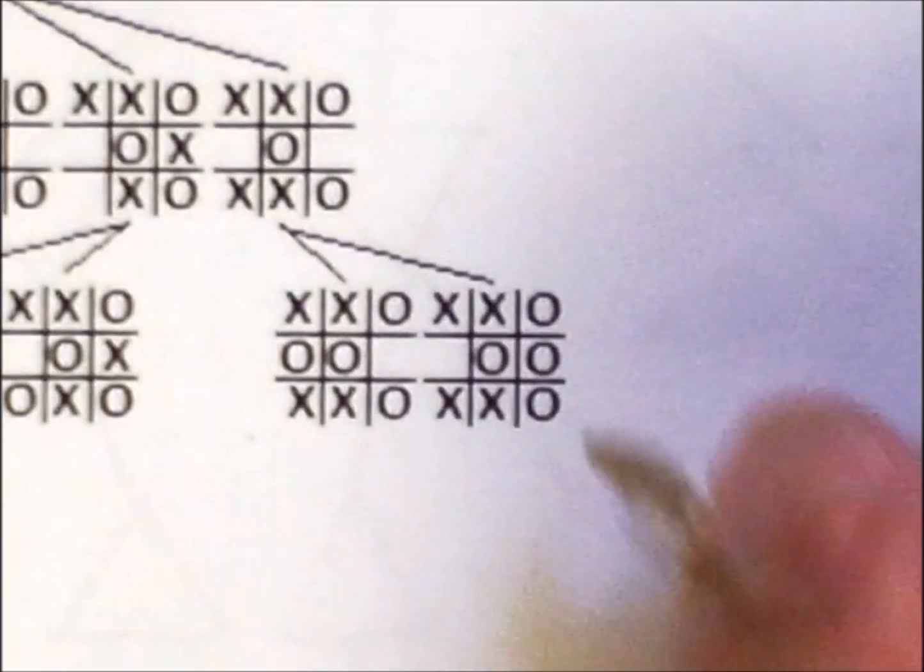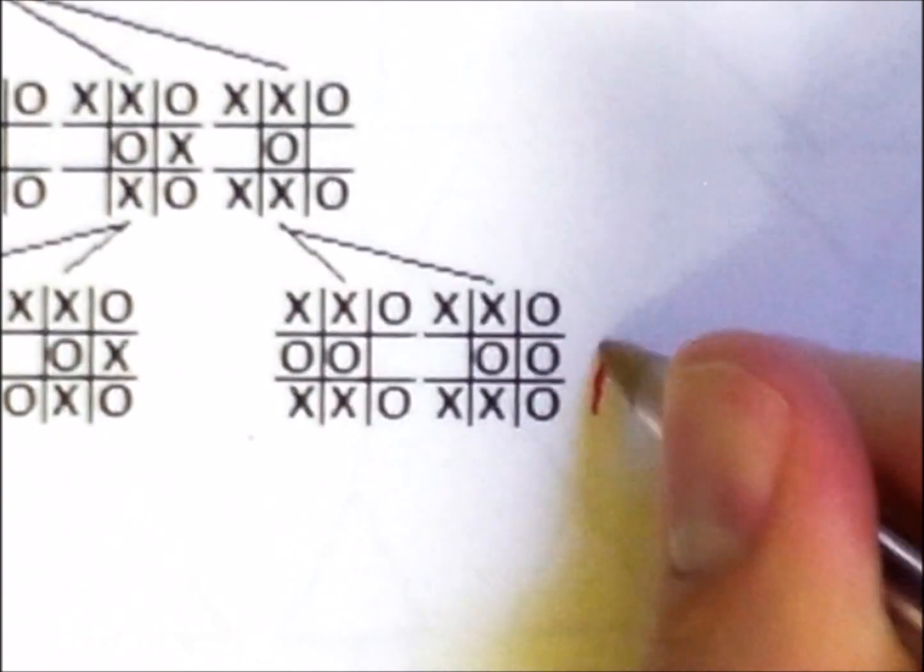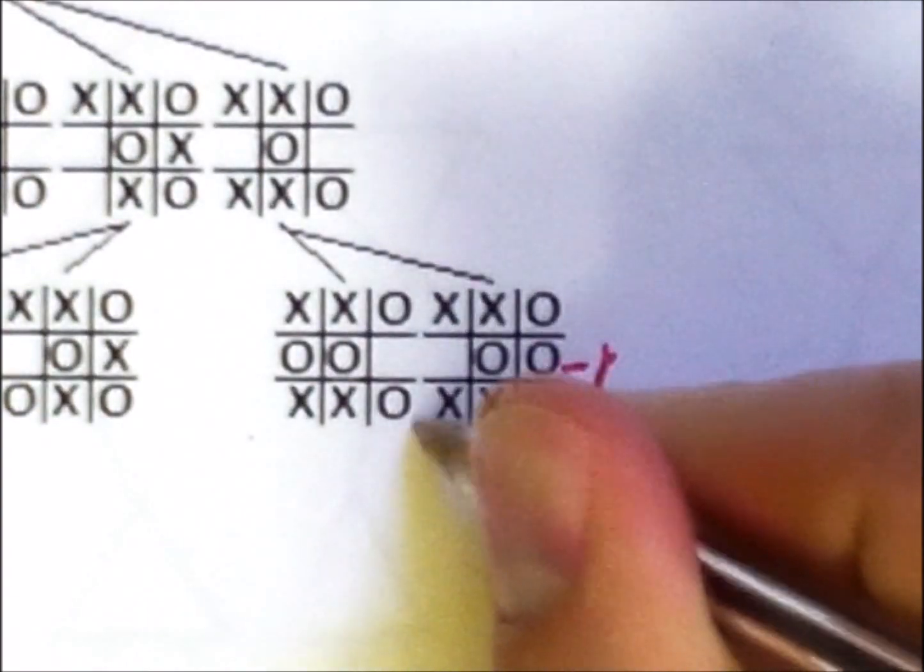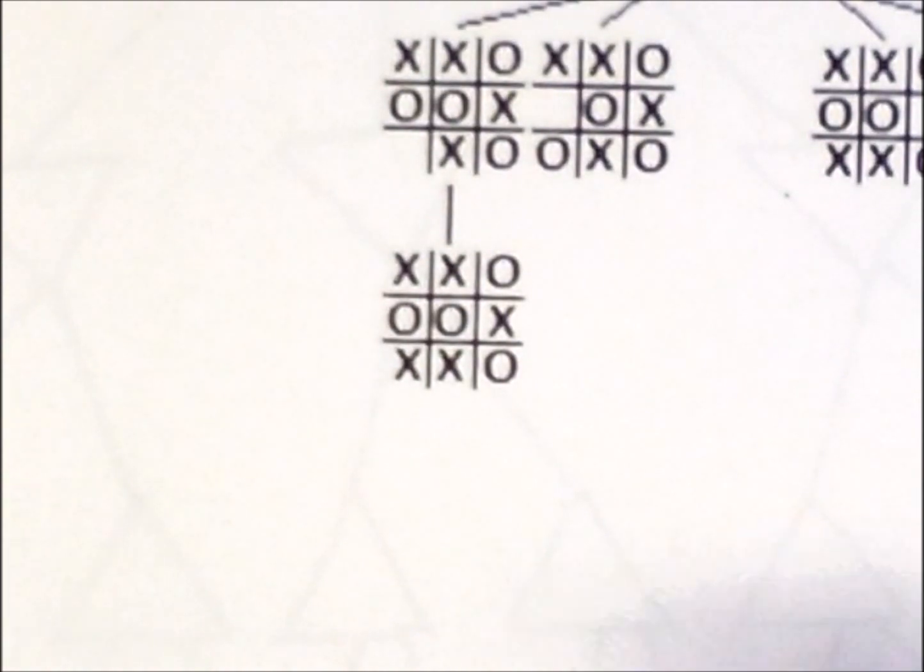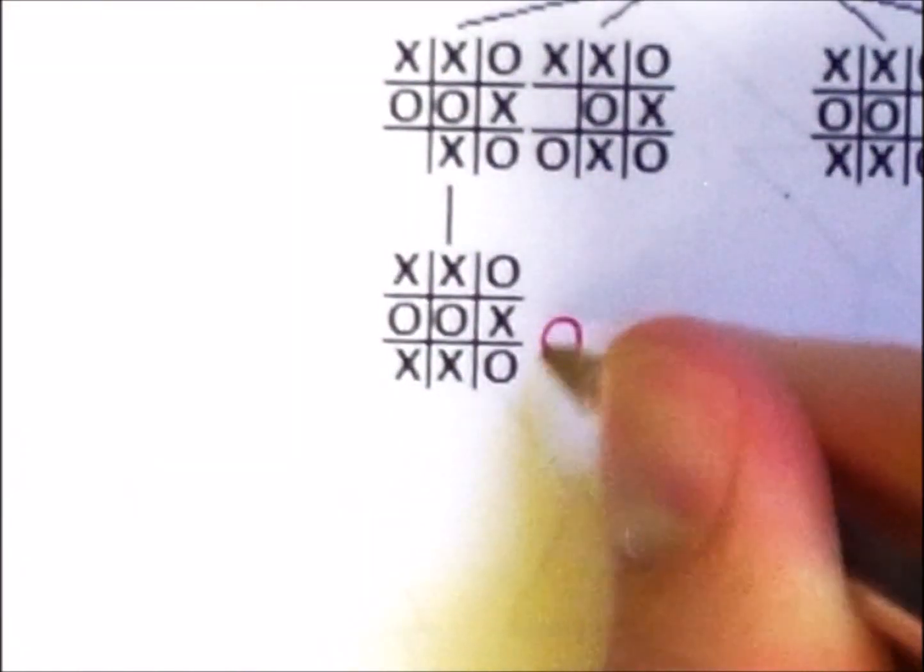A state where o wins a value of negative 1, and a state with a draw a value of 0.